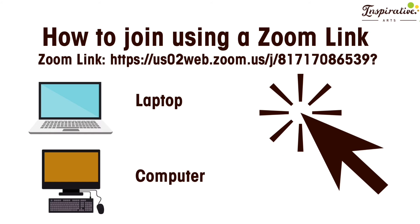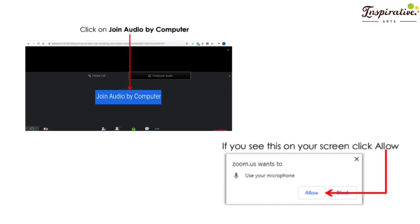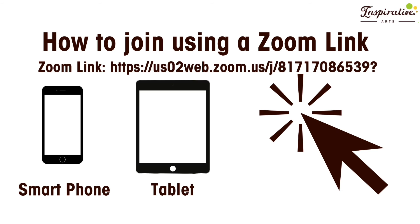To join via the meeting link using a laptop or computer, open the email or message from Inspirative Arts and click on the link. You may then be asked to join audio by computer or to allow zoom.us to access your microphone. Press allow so you can hear other people, and you will then be connected to the Zoom meeting.